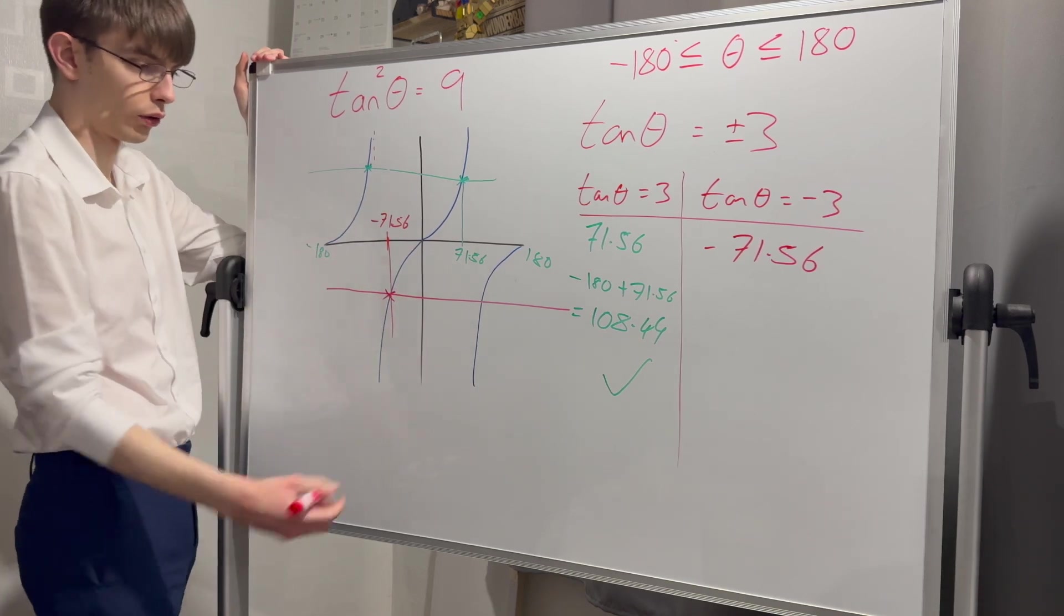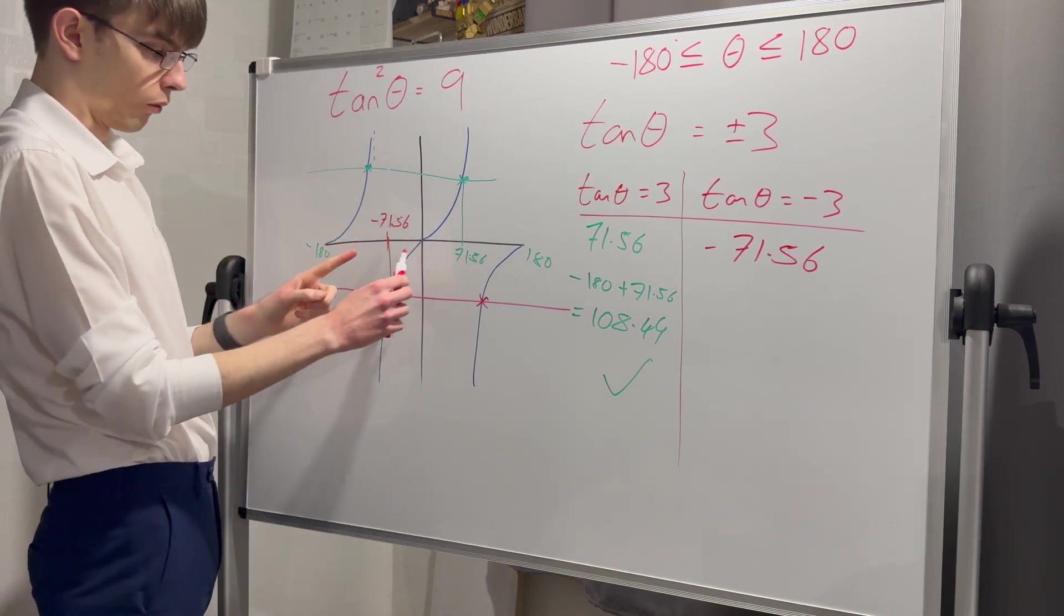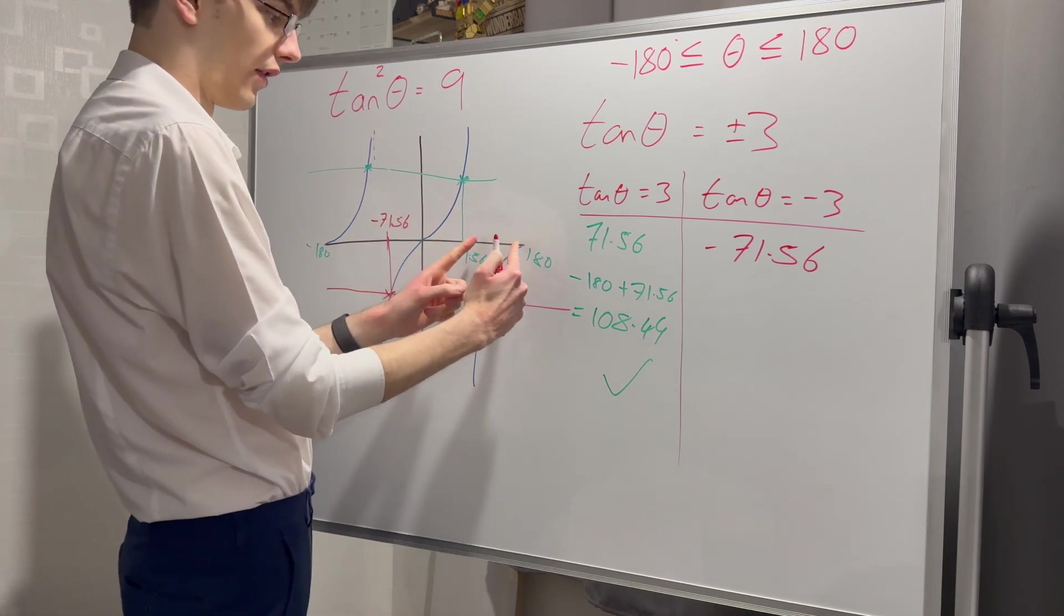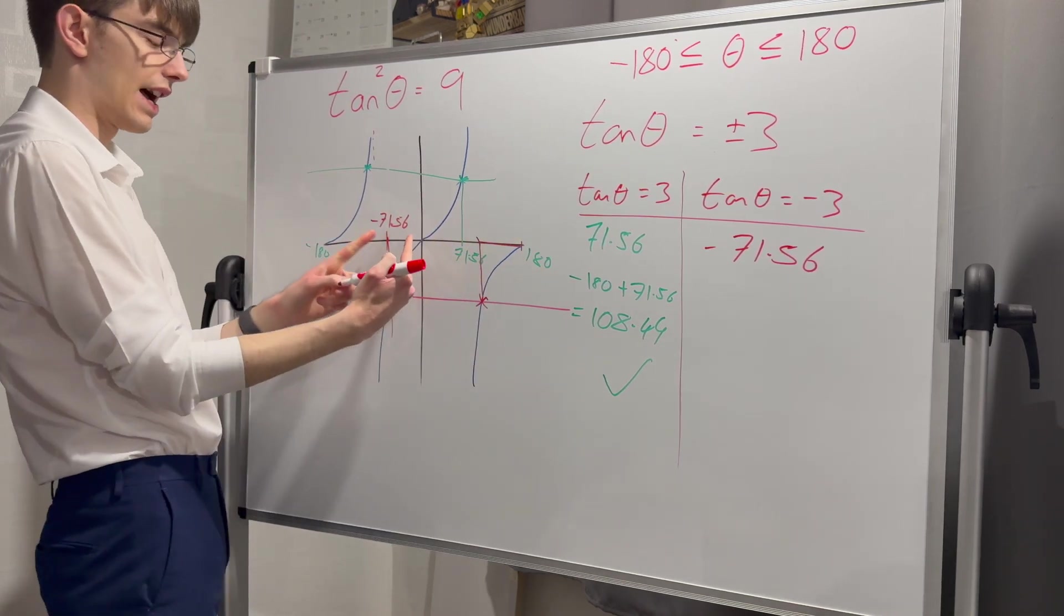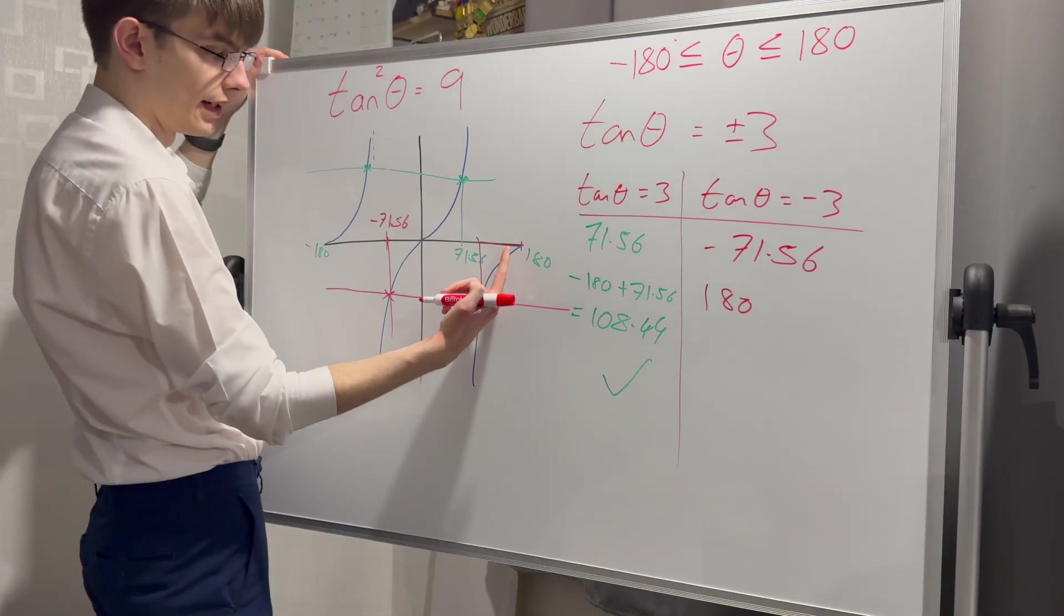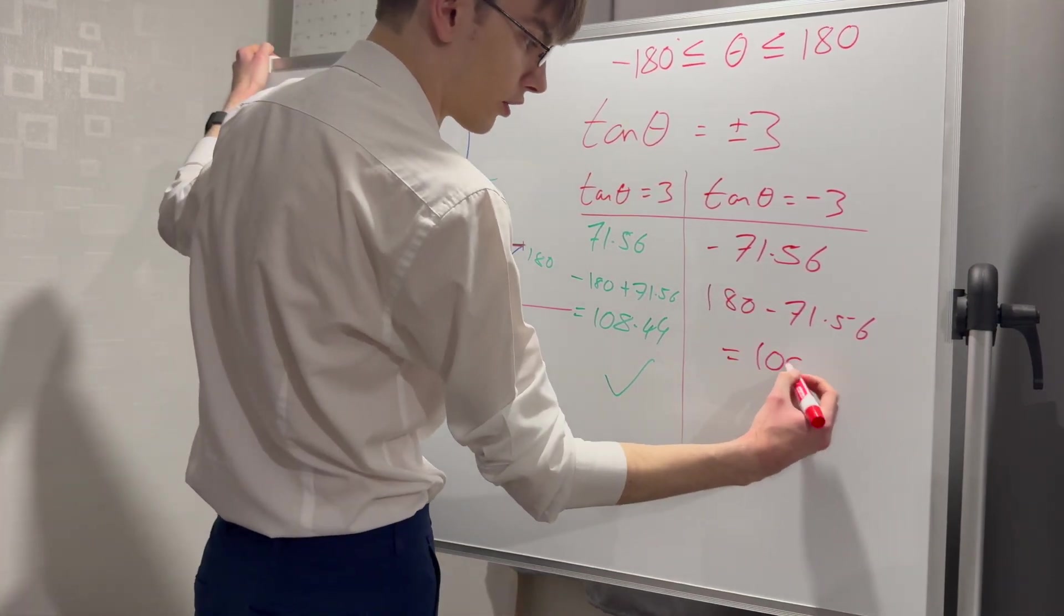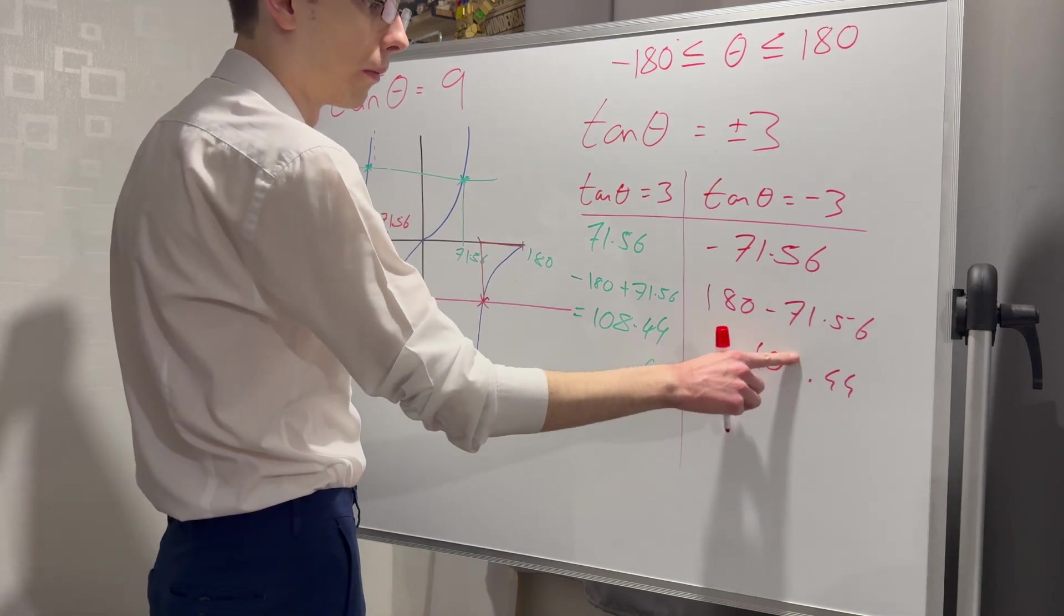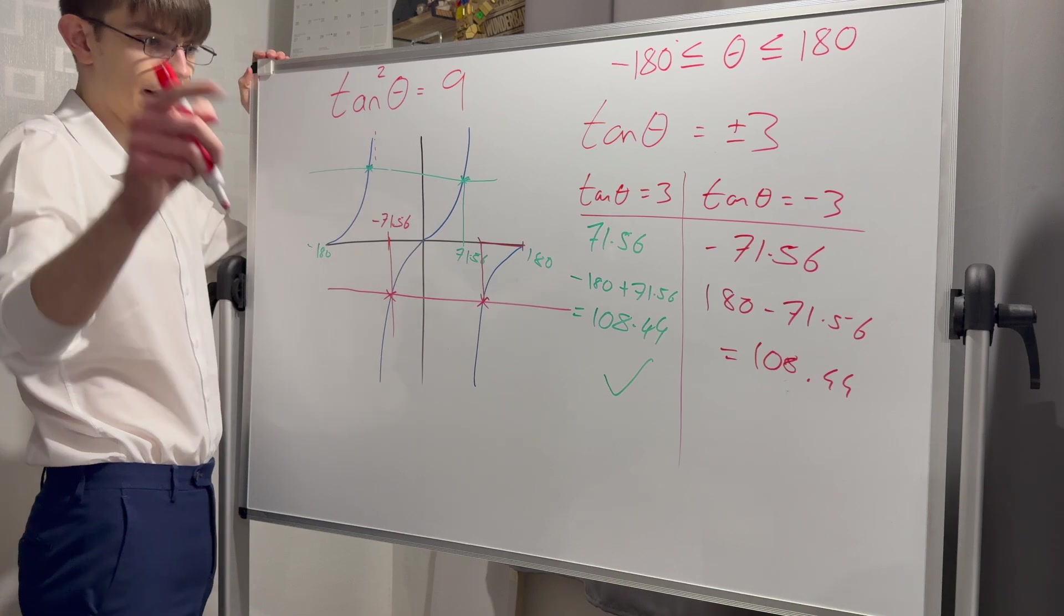This time there's nothing above me, I'm going to have to go below. Draw it straight down, draw my line across. Where does it hit my graph? Once there and once here. I've got the distance to the next point that the graph hits zero, which is 71.56. That distance and that distance are going to be the same. So my other value is 180 minus 71.56, which is 108.44.